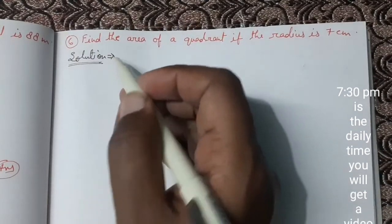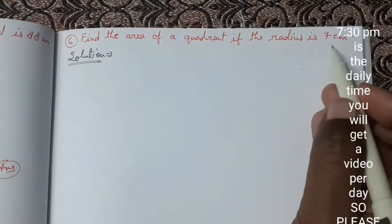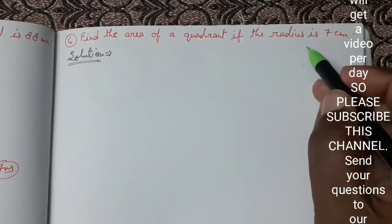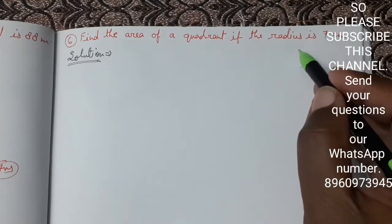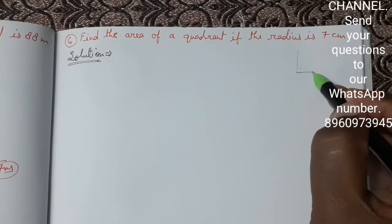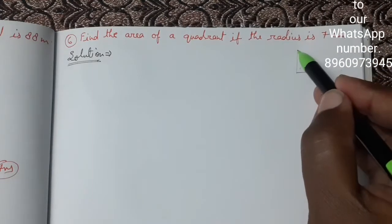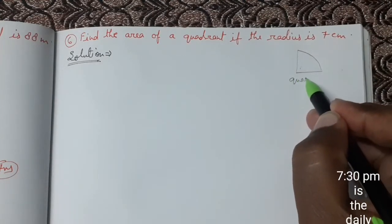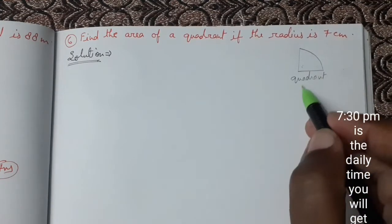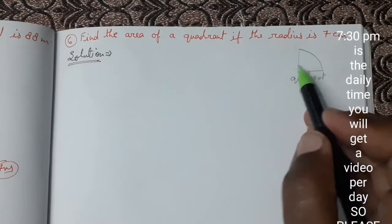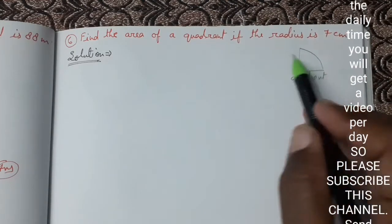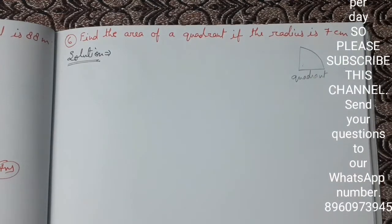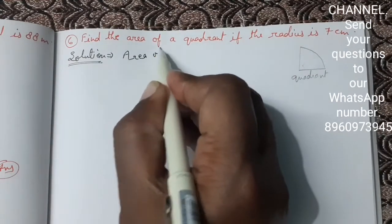Now we have come to question number 6. Find the area of a quadrant if the radius is 7 cm. First I will tell you what is a quadrant. A quadrant has two radii and is one-fourth part of a circle. Since we are finding the quadrant area, it will be one-fourth of the circle's area.